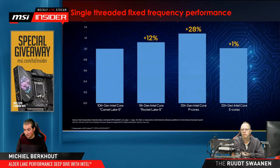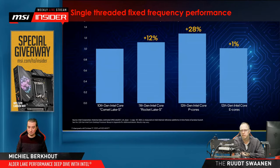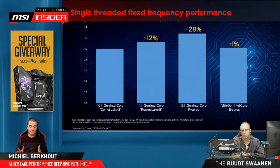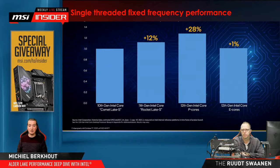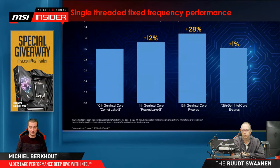Somebody in chat is saying that some games won't run on 12th gen Intel due to DRM, like Denuvo. We're going to show that as well — it's a bit hit or miss. This is also because it's a completely new architecture and games are not yet always optimized for it. A lot of recent game developers are already announcing patches to solve those issues. From MSI's side, they're also working on improving compatibility with older games.